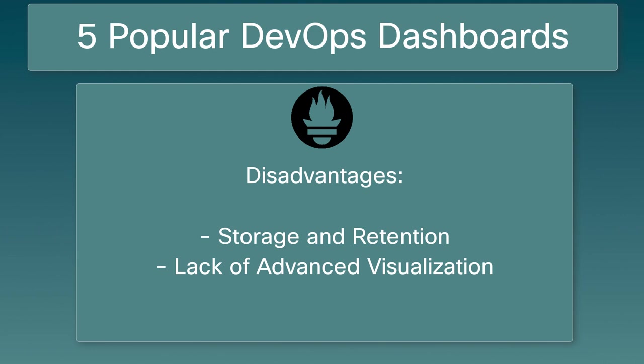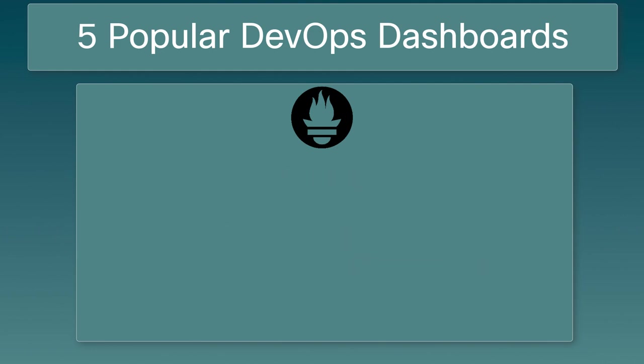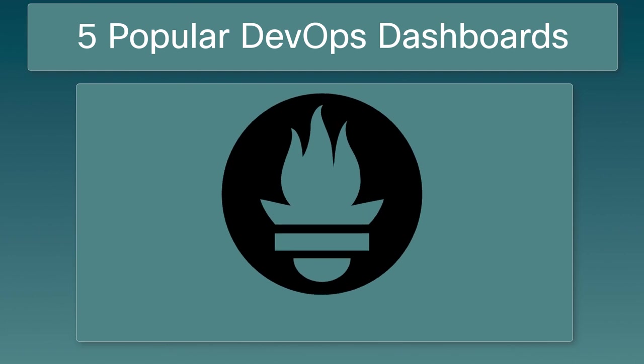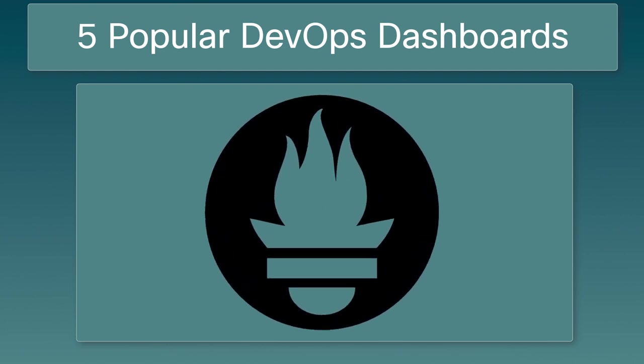Prometheus is often used as a data source for Grafana, as Grafana provides a more advanced and flexible visualization layer on top of Prometheus. Together, Prometheus and Grafana form a powerful combination for monitoring, analyzing, and visualizing metrics.